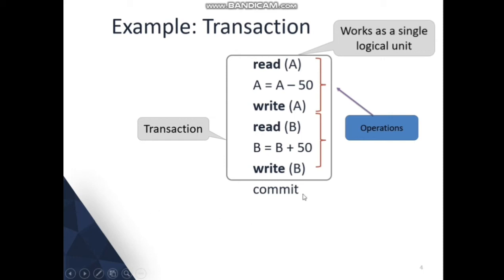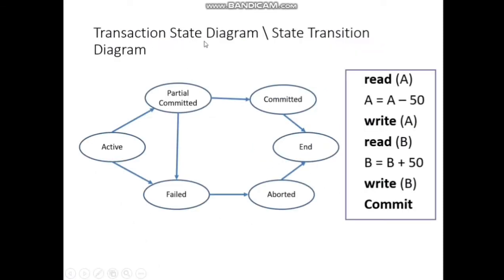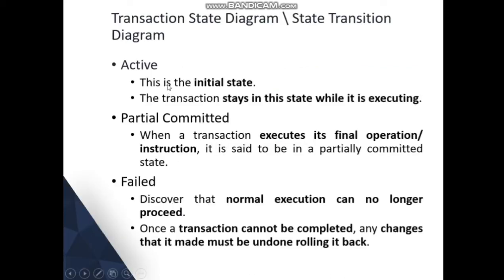Now the transaction state diagram, also called the state transition diagram, has six states: active, partial committed, failed, committed, and aborted. Active means the transaction is ready to execute; partial committed means it is halfway executed; failed means the transaction failed; committed means it executed successfully. We will learn each state in detail.